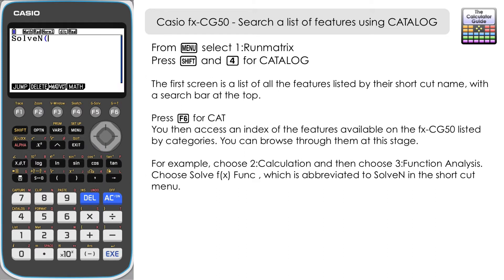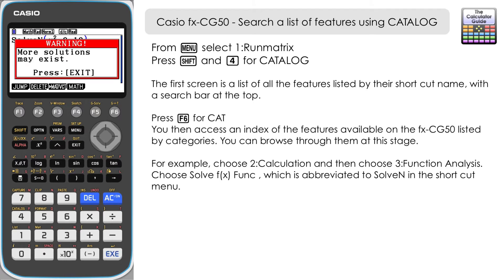You might notice that's brought up Solve N. If we'd have selected that from the shortcut menus using the F buttons we'd have just had Solve N, but you can see a more broad description of what the feature actually does from the catalogue menu. So for example we can solve x² - 3 = 13 and we get the warning that more solutions may exist. Let's exit — we've got our solutions: negative four and four.